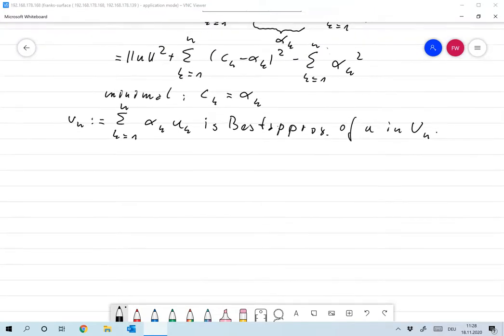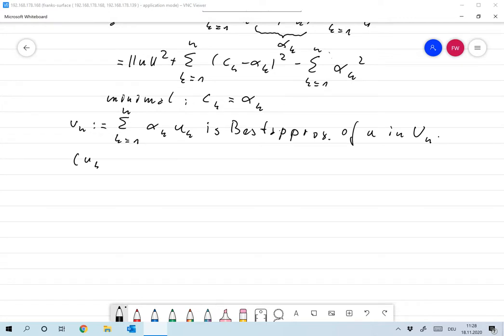Now let's assume that the UK is complete. As I just noted, I can find an N and a G in UN such that the norm of U minus G is less than or equal to epsilon. But since G is in UN, we have that the norm of U minus VN is less than or equal to the norm of U minus G, and this is smaller than epsilon.